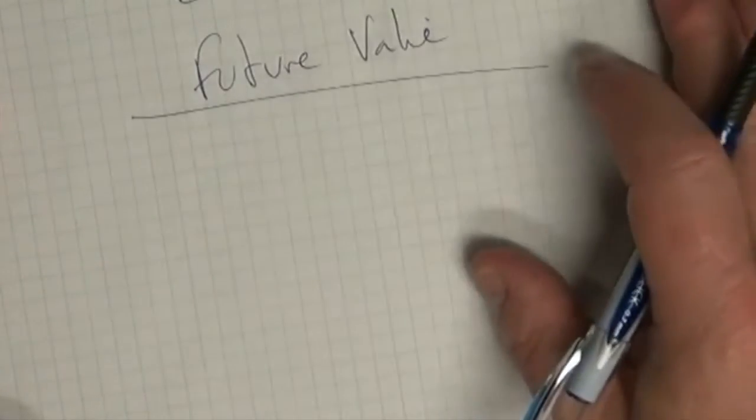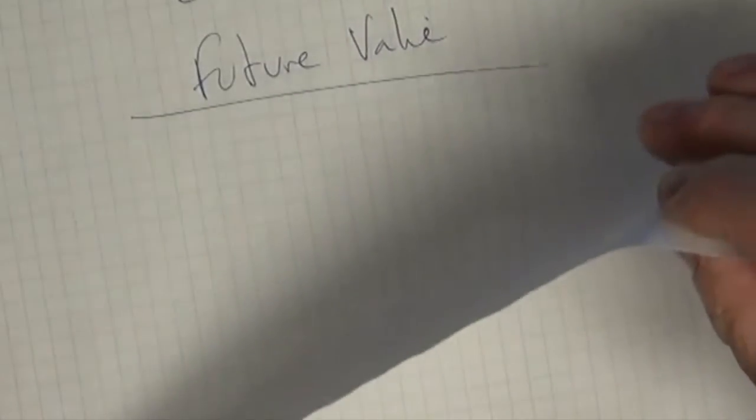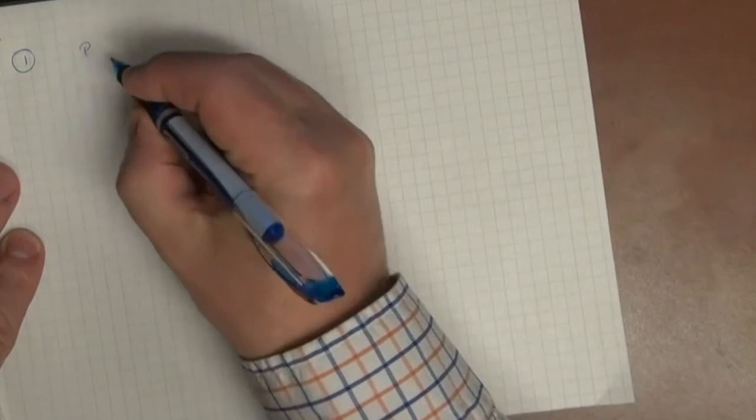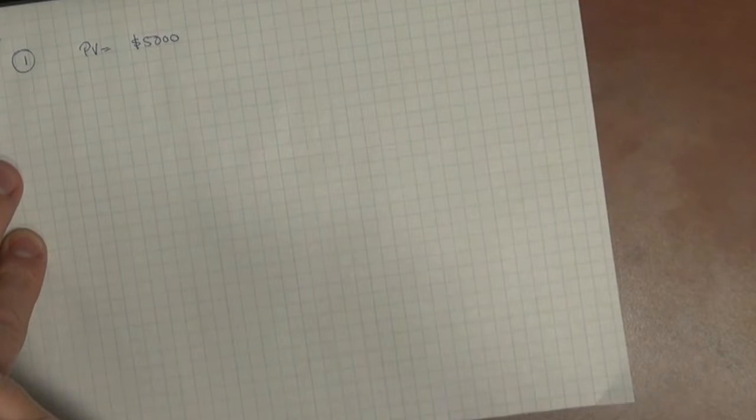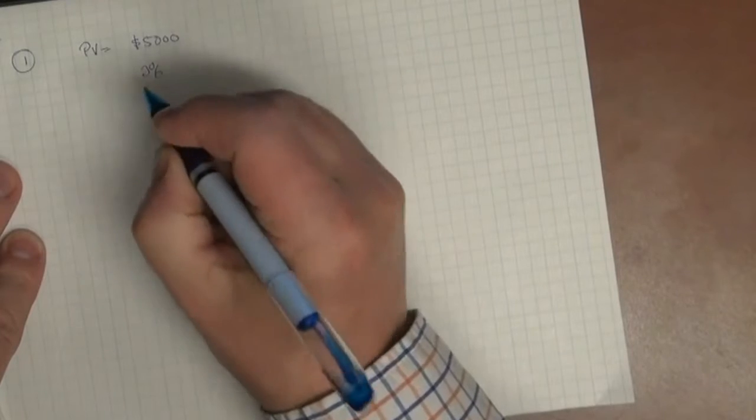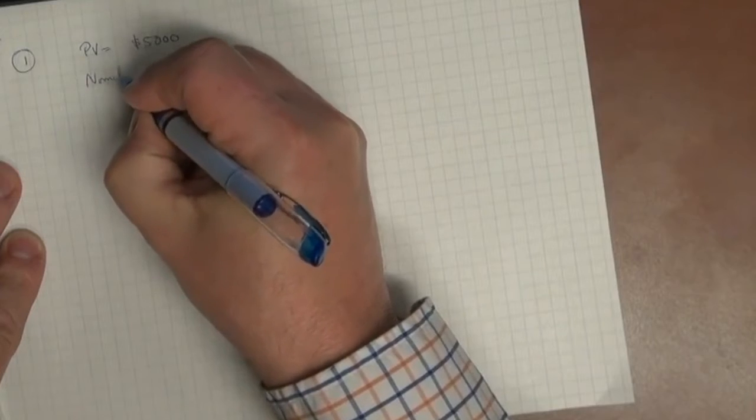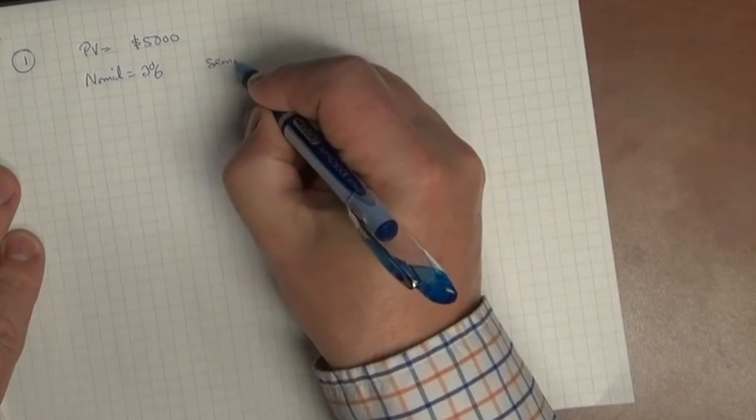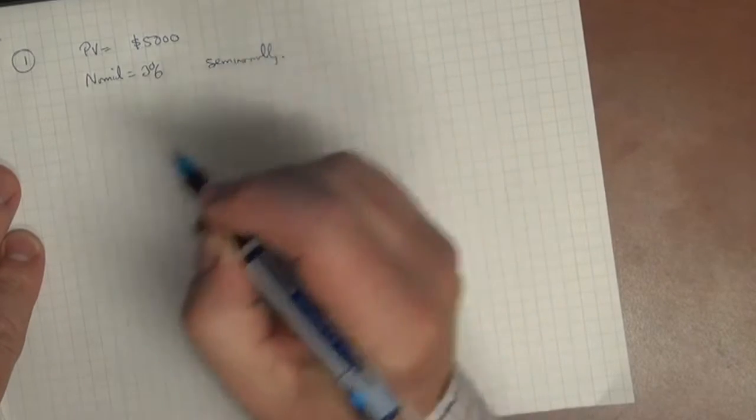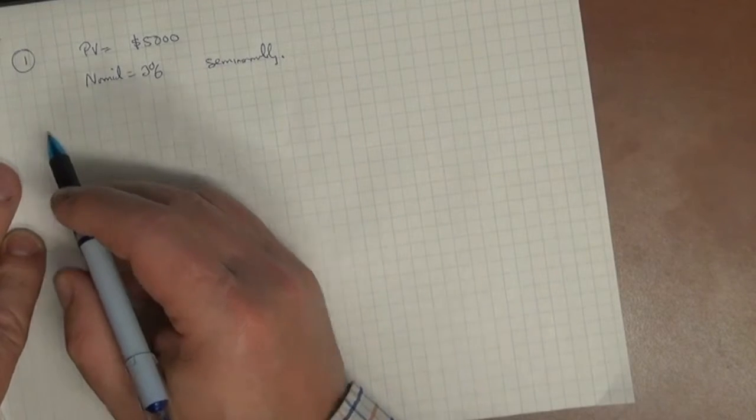And we're doing it in the context of compound interest. So section 8.2 looks at it in terms of compound interest. Let's take a look at some of the problems. We'll start off with number 1. Number 1 says, what is the maturity value of $5,000 invested at 3% compounded semi-annually for 7 years? So we've got a present value of $5,000. It is invested at 3%, and 3% is the nominal rate of interest. And it's compounded semi-annually, and we also note that it's for 7 years.